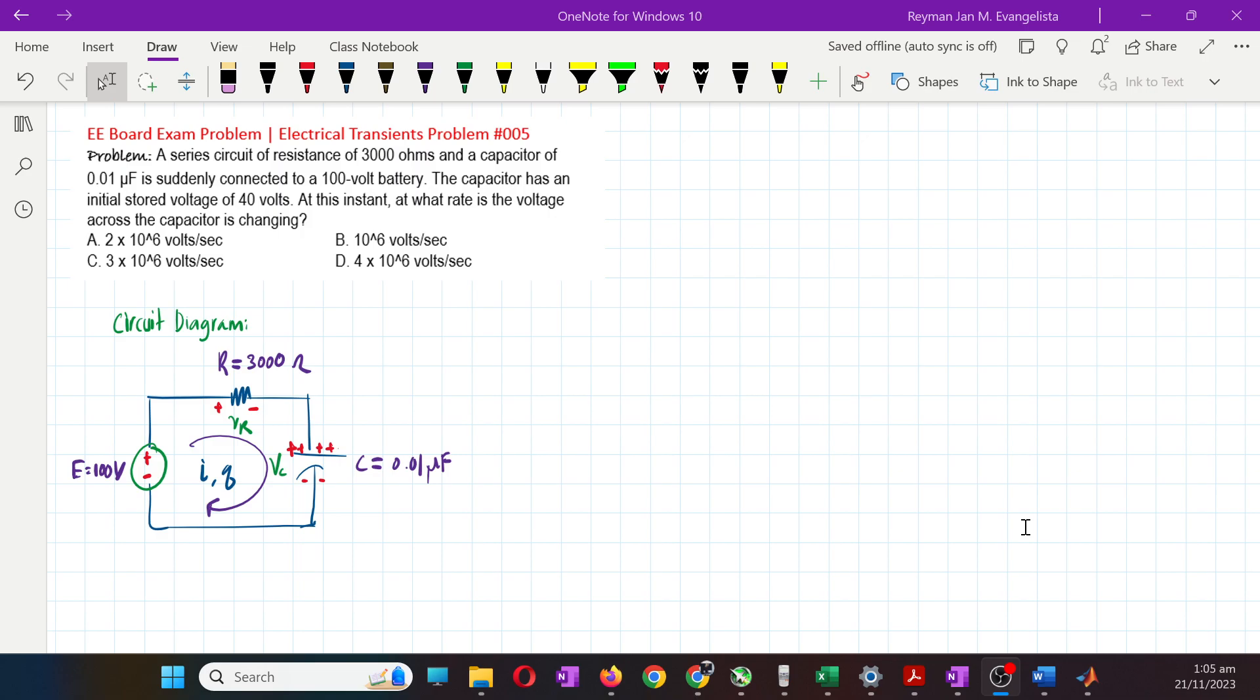The capacitor has an initial stored voltage of 40 volts. At this instant, at what rate is the voltage across the capacitor changing? I've already drawn this in our circuit diagram - the R, the C, the supply, the polarities, and the direction of the current.